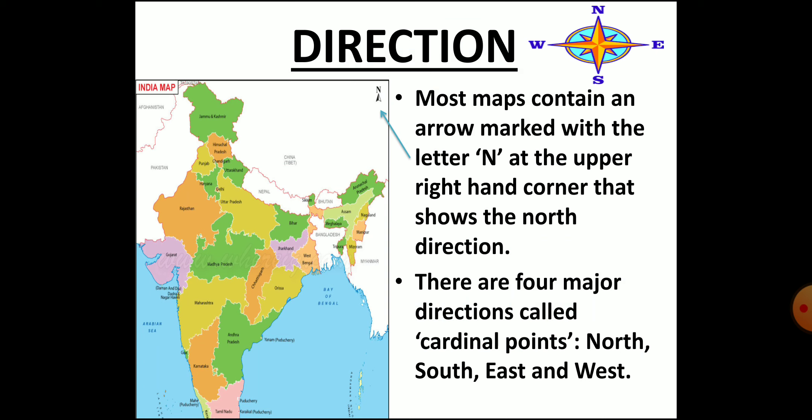Children, direction is another main component of a map. You must have noticed that most of the maps have an arrow marked with the letter N at the upper right hand corner as it is here in the picture shown. This arrow indicates the north direction. There are four principal directions: north, south, east, and west. They are called cardinal points. If you know the north, you can easily mark or find out other directions.